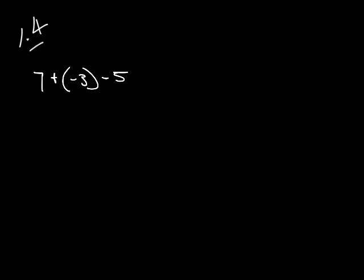So we're not subtracting 3 here, we're adding the opposite of 3. What we're going to do is change everything to a plus sign. We're going to leave that alone because it's already a plus sign, then make that a plus sign, and then we can go ahead and solve this from there.